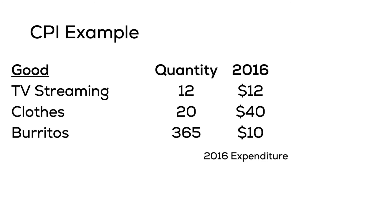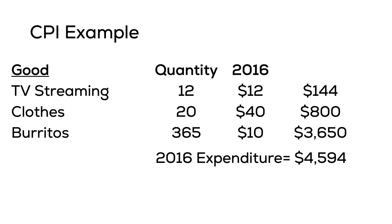The base year CPI will always be 100. Now let's calculate CPI for 2016. The basket of goods remains the same, but prices have changed: TV streaming increased to $12, clothing is now $40 each, and burritos are $10 each. Remember, the basket remains constant — only prices change from year to year. Total expenditure on TV streaming is 12 times $12, or $144.